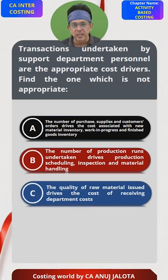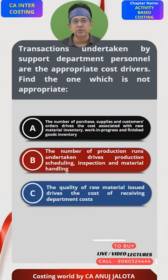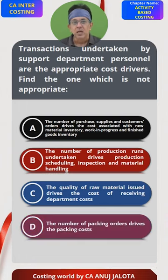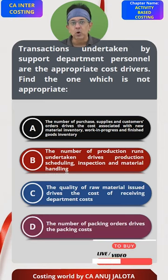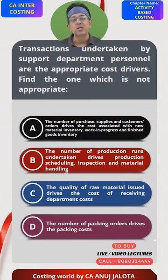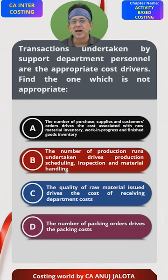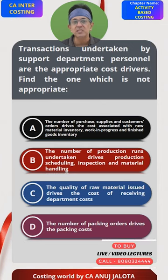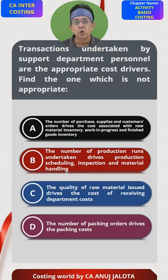Option C: the quality of raw material issued drives the cost of receiving department. I'll come back to C. Option D: the number of packing orders drives the packing cost. D is proper because how many times you will pack determines your packing cost.